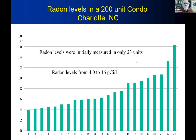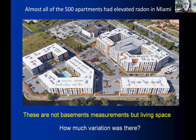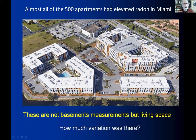Both buildings have concrete slabs, meaning radon emanates from floor and ceiling. The Charlotte building also had concrete stairwells. The Miami building had solid concrete interior walls dividing bedrooms from the kitchen, adding substantial emanation surface. The Charlotte building had a parking garage below, which was investigated and found to have no significant radon. The Miami building is slab-on-grade.